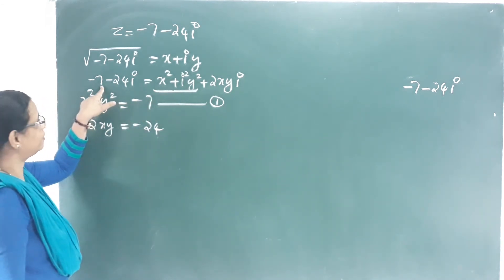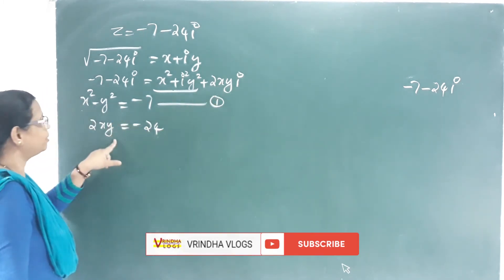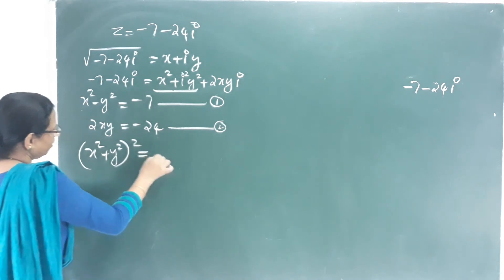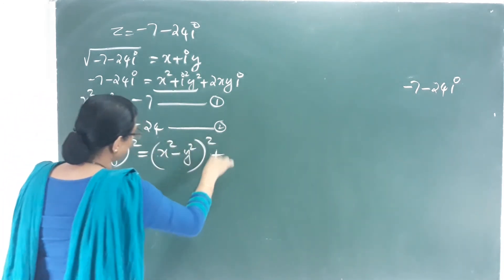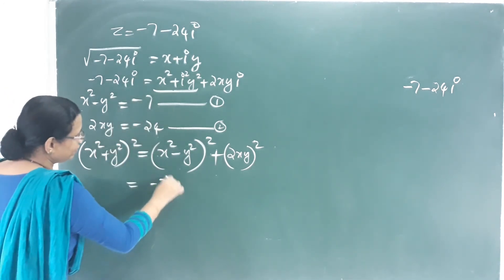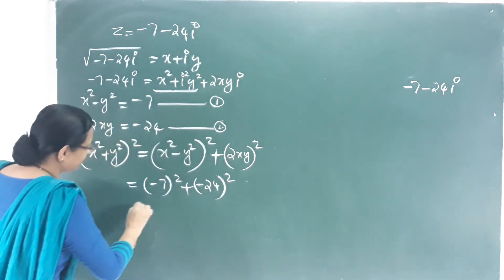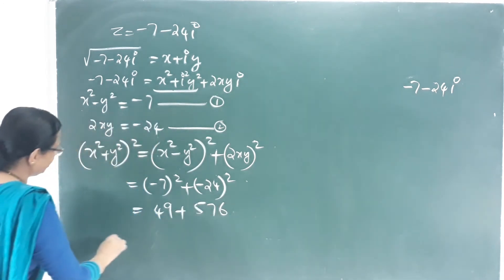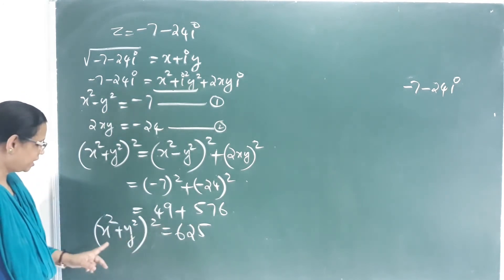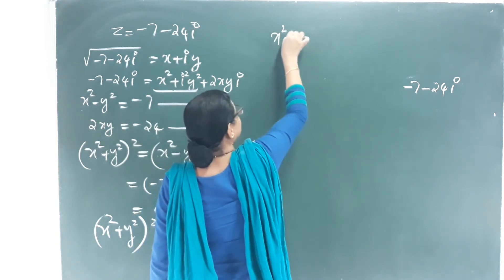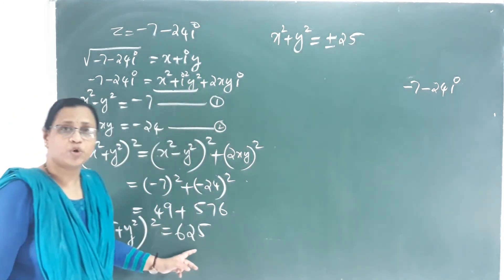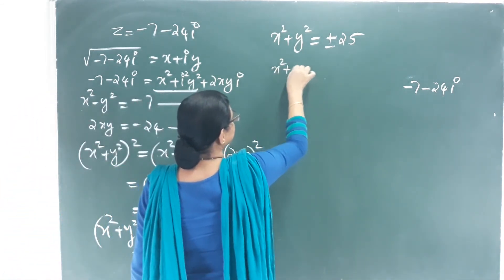Using the identity (x² + y²)² = (x² − y²)² + (2xy)²: (x² + y²)² = (−7)² + (−24)² = 49 + 576 = 625. Therefore x² + y² = √625 = ±25. We take the positive value: x² + y² = 25 (Equation 3).